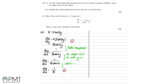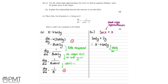Part B1 says: use the small angle approximation for sine 2y to find an equation linking x and y for points close to the origin. The small angle approximation is that sine x, for small values of x, is approximately equal to just x. So sine 2y for small values of y is approximately 2y. Therefore x equals 4 sine 2y becomes x approximately equals 4 times 2y, so x is approximately equal to 8y.